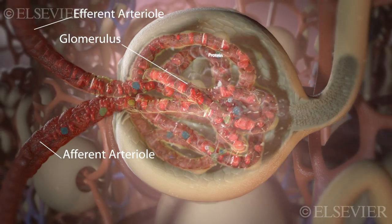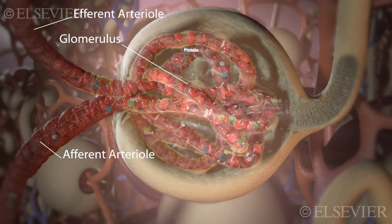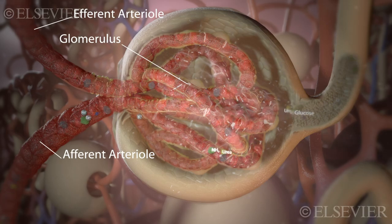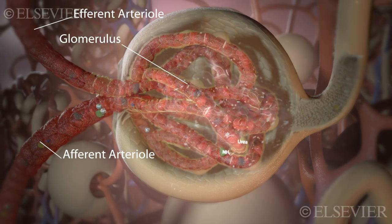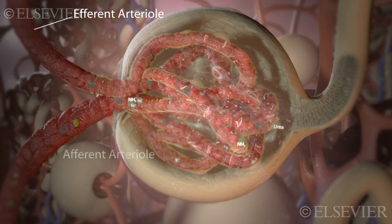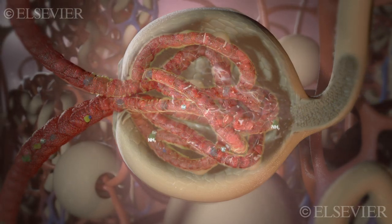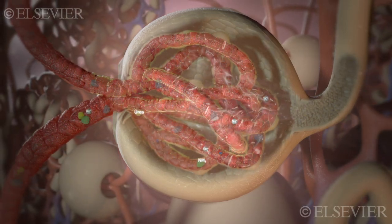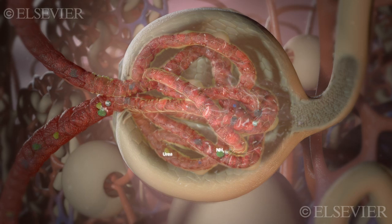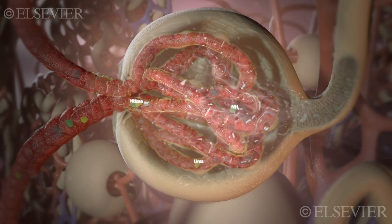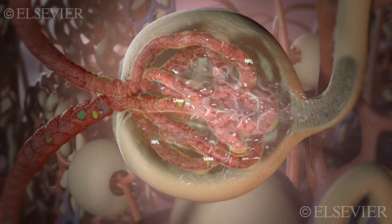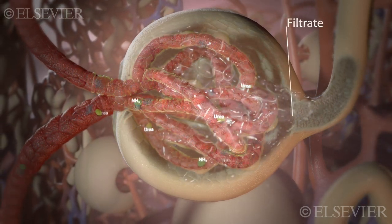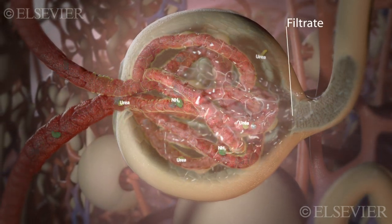This difference in size means that the pressure of blood in the glomerulus is high enough to filter substances out of the blood. Water, glucose, ions, and wastes are filtered into the hollow Bowman capsule, forming a fluid called filtrate.